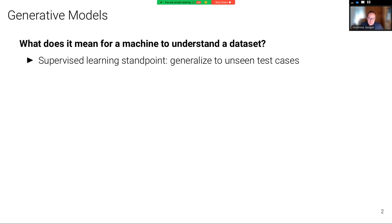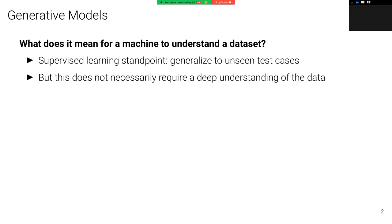What does it mean for a machine to understand a dataset? Well, from a supervised learning standpoint, it means to generalize to unseen test cases. But this does not necessarily require a deep understanding of the data. As an example, the texture bias of CNN classifiers just ignore the shape and focus entirely on texture, while for humans it's actually quite important to use the shape as a cue for recognition.